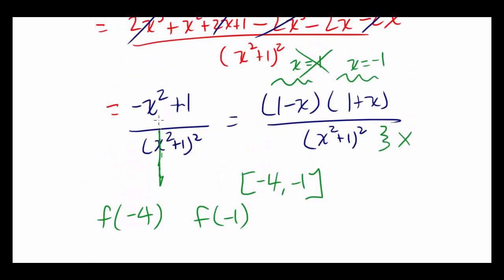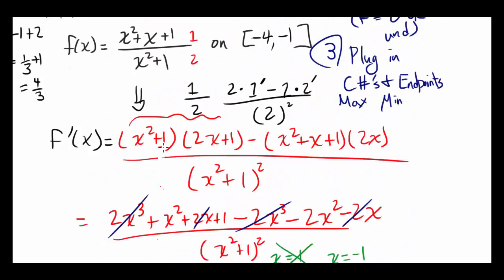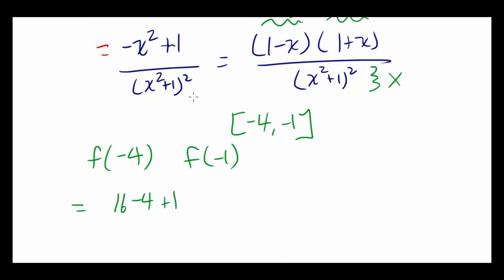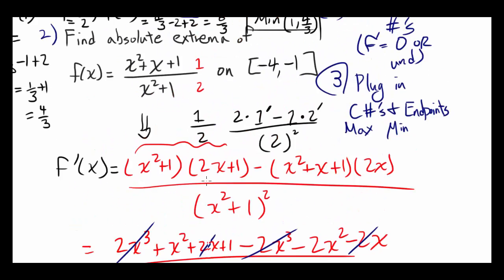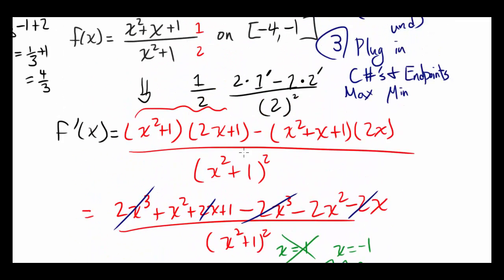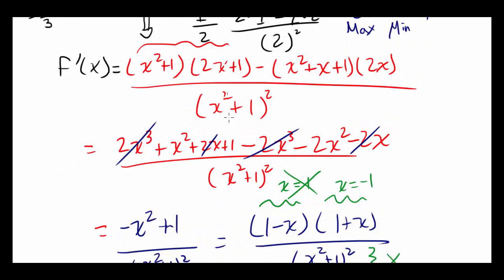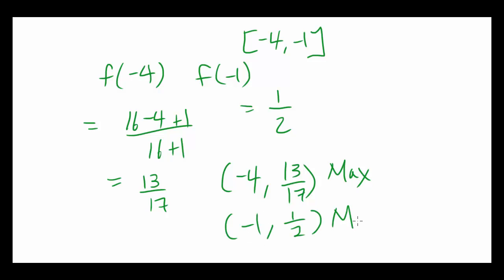f(-4) = (16 - 4 + 1)/(16 + 1) = 13/17. f(-1) = (1 - 1 + 1)/(1 + 1) = 1/2. Since 13/17 is greater than 1/2, the absolute maximum is at x = -4 with value 13/17, and the absolute minimum is at x = -1 with value 1/2.